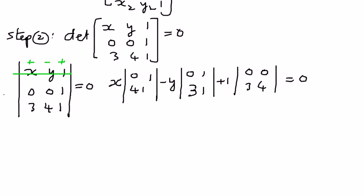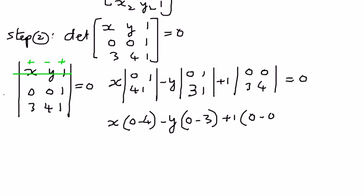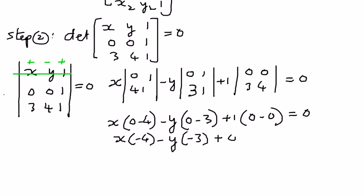When we simplify this, it comes out as follows: x times (0×1 minus 4×1) gives negative 4, minus y times (0×1 minus 3×1) gives negative 3, plus 1 times (0×4 minus 3×0) gives 0, all equated to 0. So we have x times negative 4 minus y times negative 3 plus 0 equals 0, which simplifies to negative 4x plus 3y equals 0. That is the equation of the straight line.